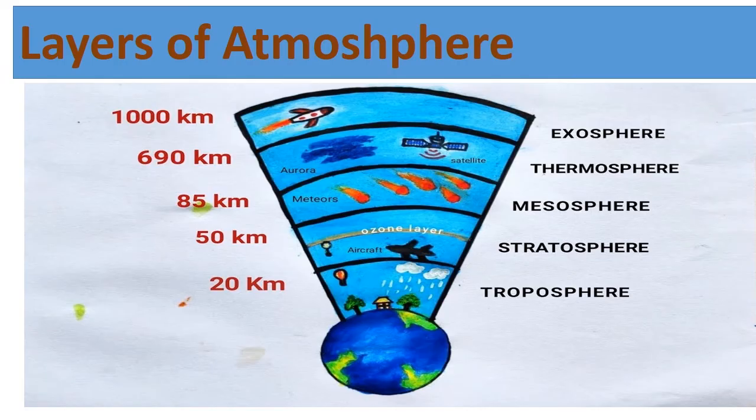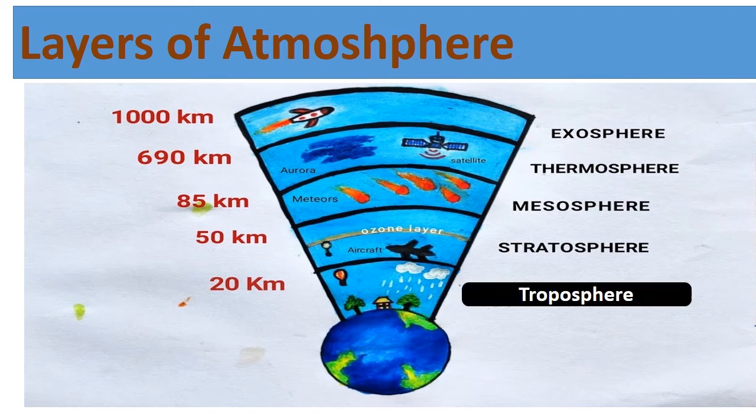Let us discuss the layers of the atmosphere. The first layer is the Troposphere. This is the first layer above the Earth's surface. Changes in the weather occur in this layer, and we live in this layer only.